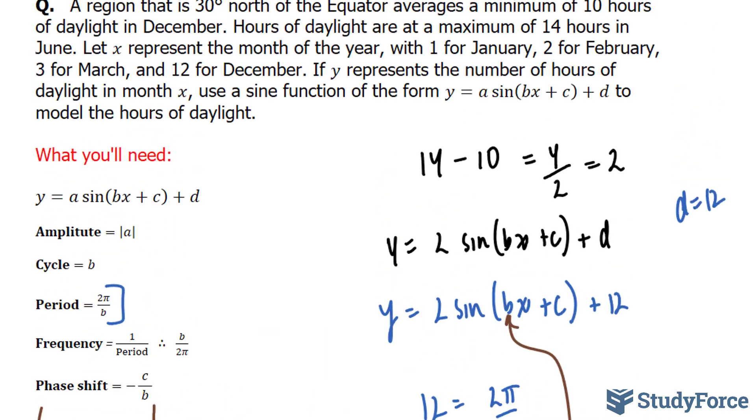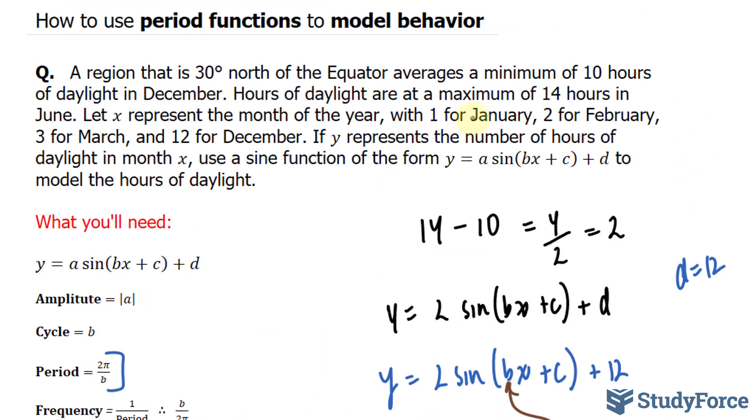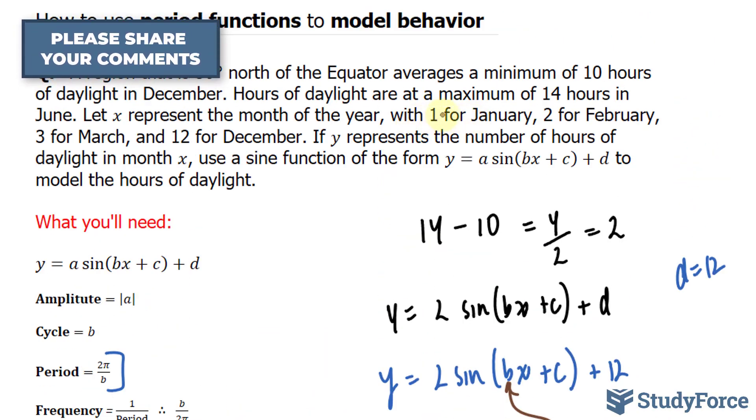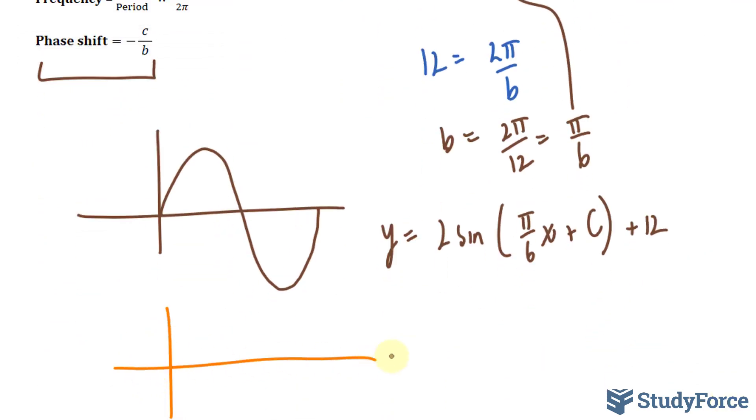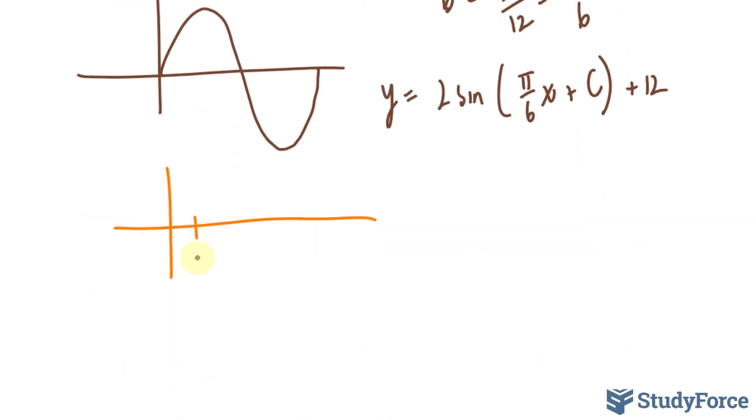Now we're told that January is x = 1. So technically our graph will be a little modified. We have 1 here that represents January, and then 2 is February and so on. To find the phase shift, which will represent c, we need to find out where our waveform starts.